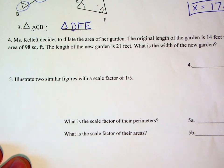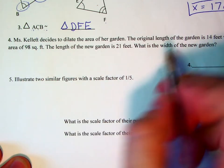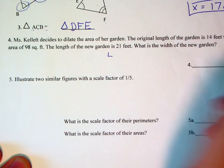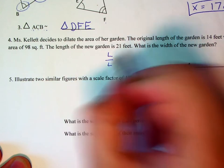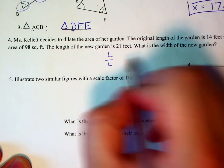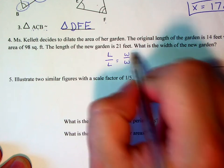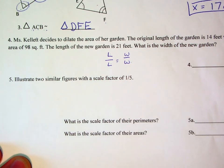We want to set up a proportion, but in order to set up the proportion, we want to have length over length, so my big garden over my small garden, is equal to width over width, again big garden over small garden.